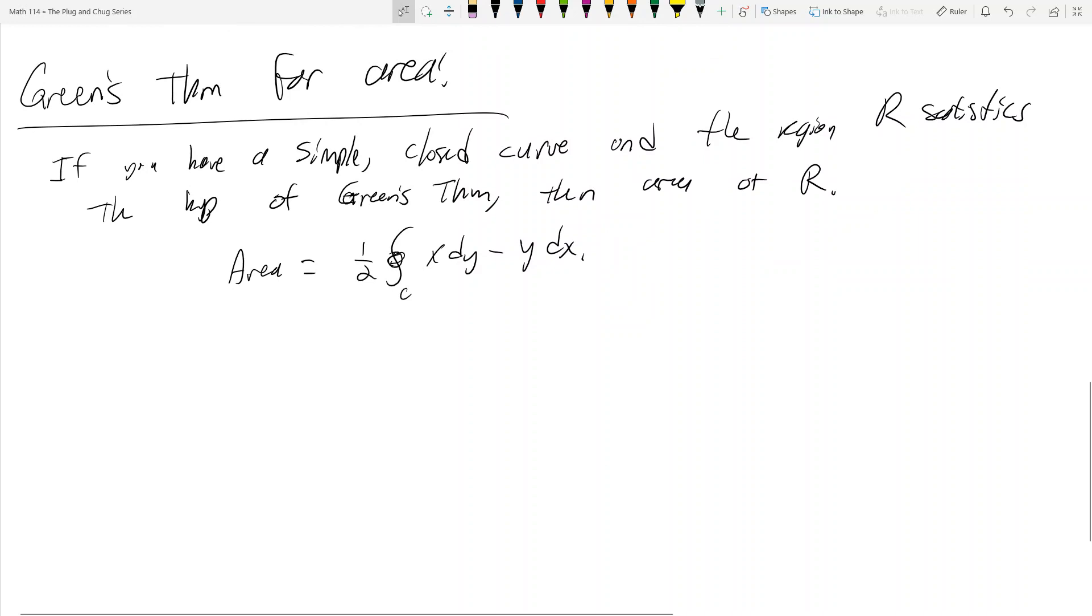So let's look at problem 16.4 number 26. We have an ellipse r(t) = (a cos t, b sin t) and t is from 0 to 2π.